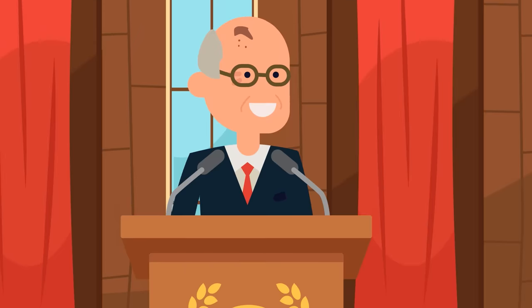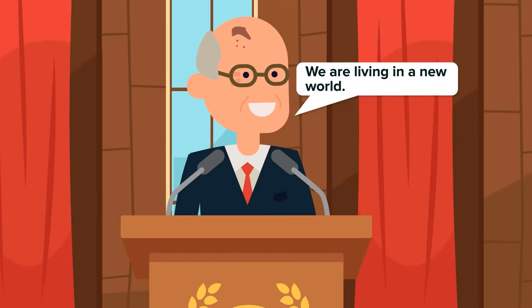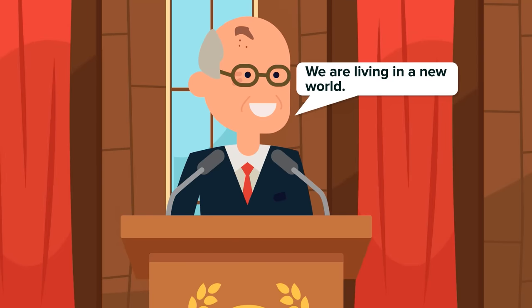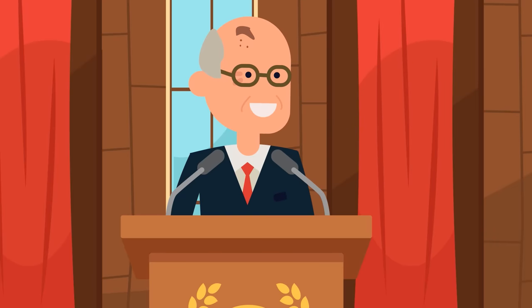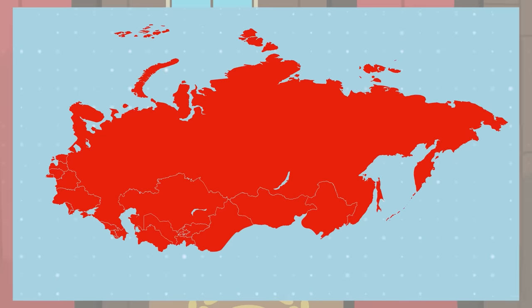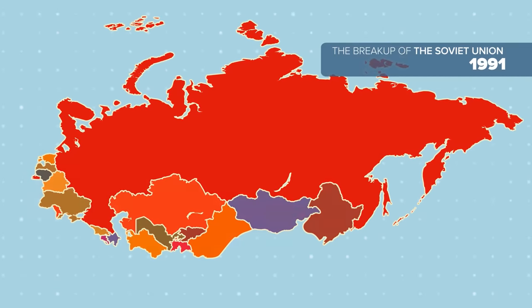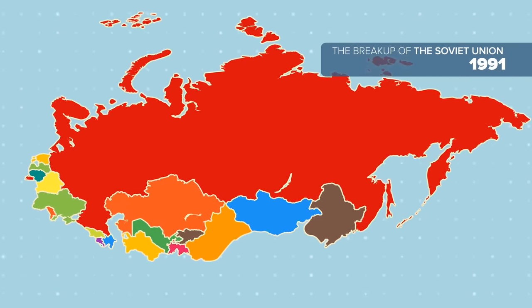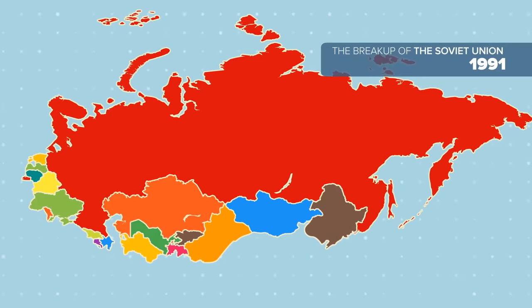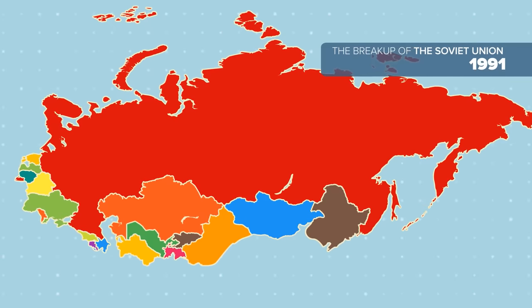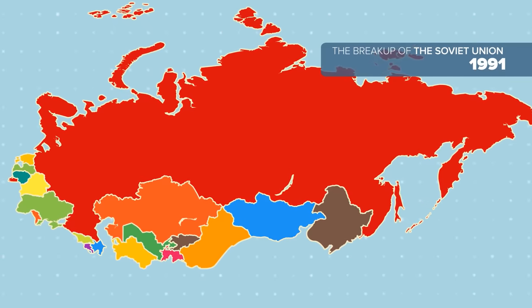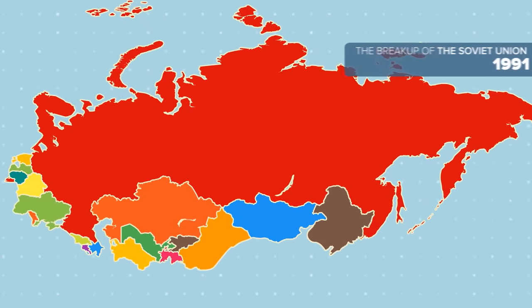Christmas Day, 1991. Soviet President Mikhail Gorbachev announced, 'We are living in a new world.' And with these seven words, the Soviet Union was dissolved and Gorbachev stepped down from his post. After 40 years of the Cold War and the threat of a nuclear holocaust, the world's largest communist state broke up into 15 independent republics, meaning the USA was now handed the accolade of new world superpower.